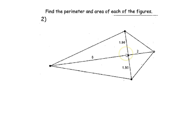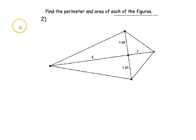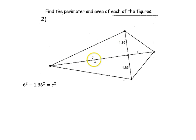This angle right here is a right angle — it would be a great clarifying question to ask, and yes it is. As a result, I can find this missing side length, which I need for the perimeter. To find it, I'll use the Pythagorean theorem: a² + b² = c². I'm missing c because this is the hypotenuse of this right triangle. I have my a and b, so: 6² + 1.86² = c².